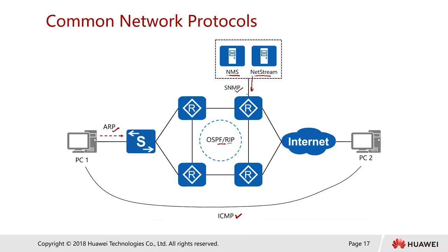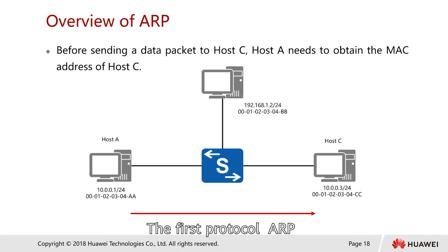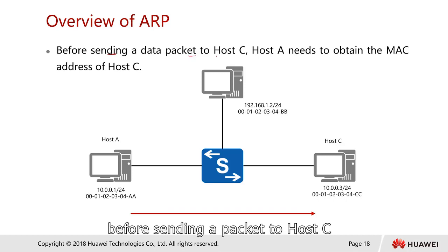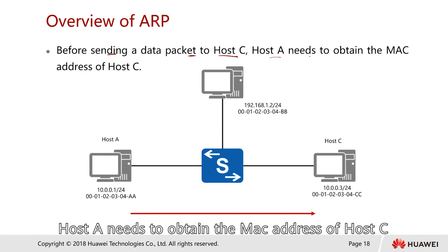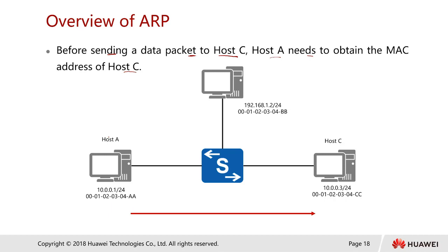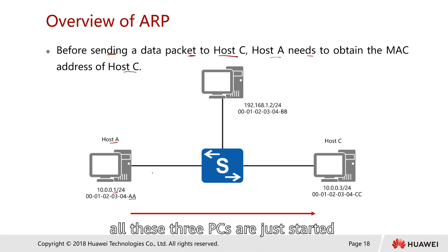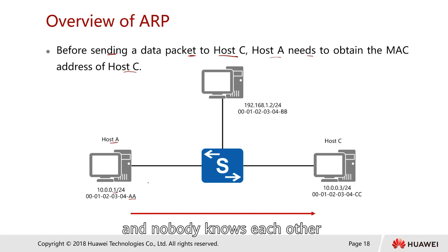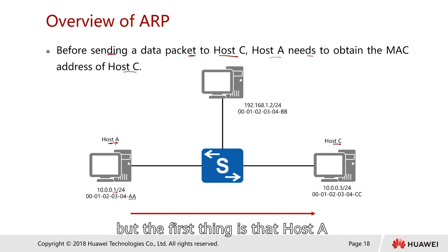Let's look at them one by one. The first protocol is ARP, which stands for Address Resolution Protocol. Before sending a packet from host A to host C, host A will need to obtain the MAC address of host C. For example, assume that all three hosts have just started up and nobody knows who is who. So let's say host A wants to talk to host C.